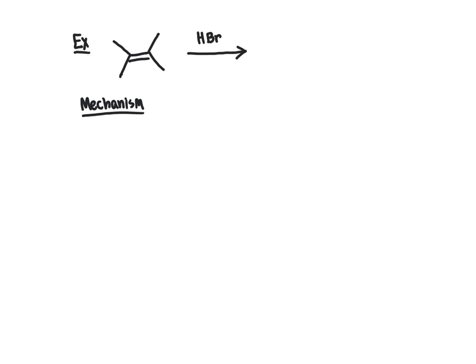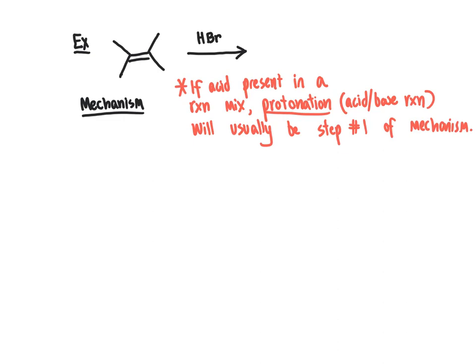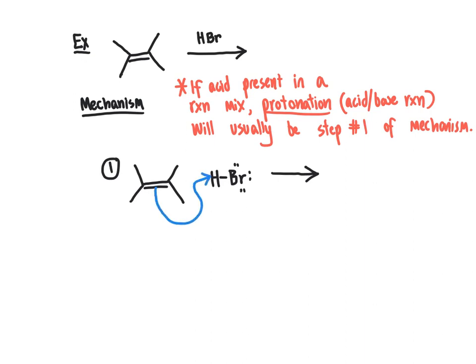That's exactly what we'll do here — protonate first. So as a general rule: if you look at a reaction, be it an addition reaction such as this or any other type, when you see acid present in the reaction mixture, you're going to expect that the first step of the reaction mechanism is generally going to be protonation — an acid-base reaction where the acid acts as a proton donor, giving a proton up to the base. Acid-base reactions are very, very quick, and so that's one of the reasons why protonation is the very first thing that happens in a lot of different mechanisms.